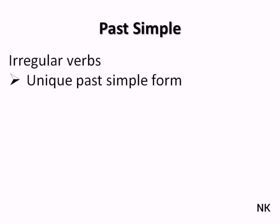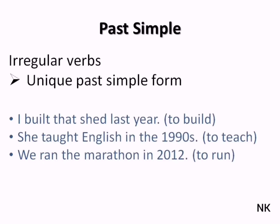Now let's have a look at the irregular verbs. All irregular verbs have a unique past simple form. I built that shed last year—the infinitive form is 'to build'. She taught English in the 1990s—the infinitive form is 'to teach'. We ran the marathon in 2012.